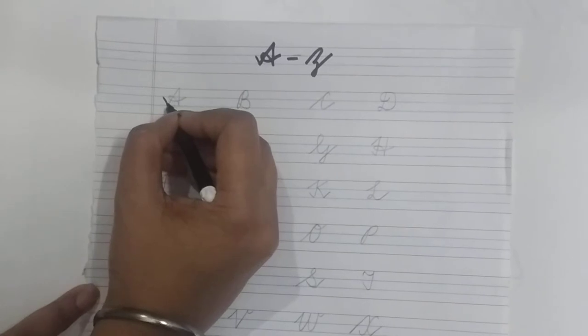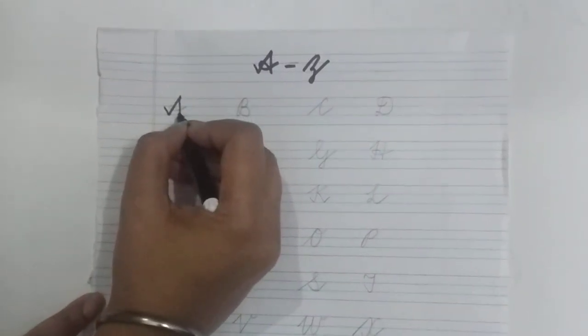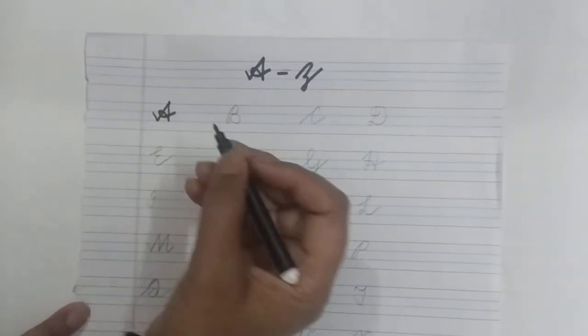Small slanting line, slant, come down, make a loop and slant. A.